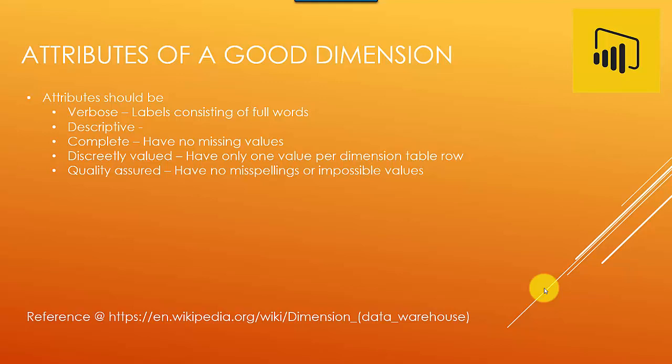Attributes should be verbose, which means labels should be consisting of full words and that should make sense to a human when they try to read it. They should be self-descriptive. Again, they should make sense.